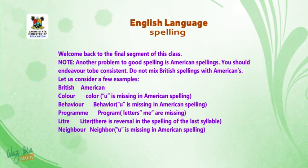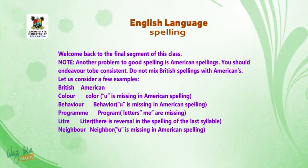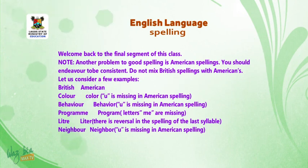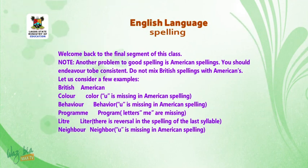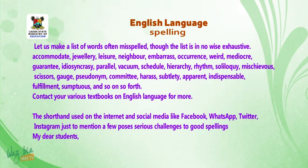British spelling versus American spelling: colour — color (U is missing in American spelling), behaviour — behavior (U is missing), programme — program (letters M-E are missing in American spelling), theatre — theater (there is a reversal in the last syllable). Neighbour — neighbor (U is missing in American spelling).